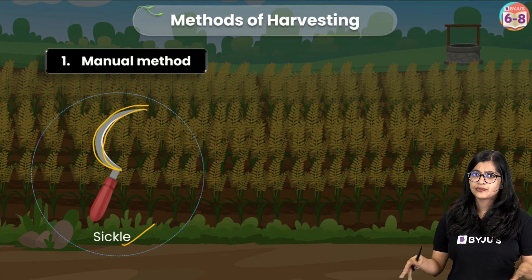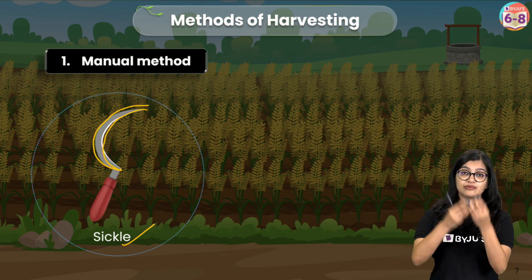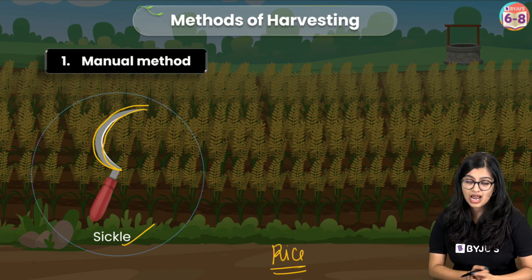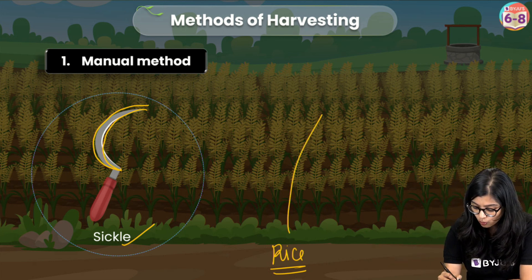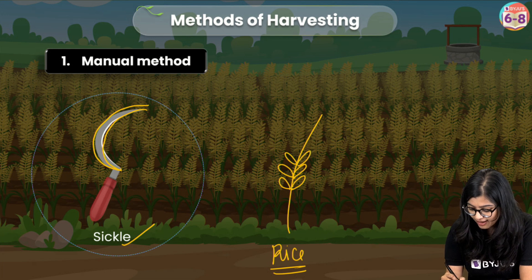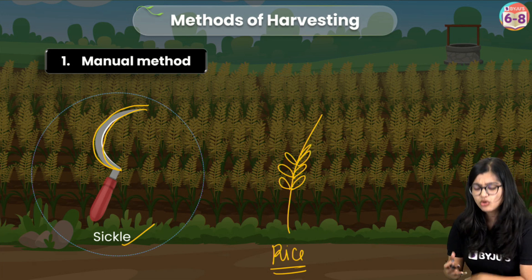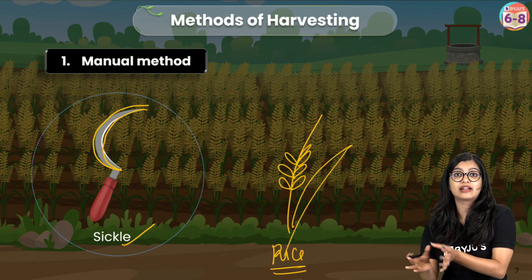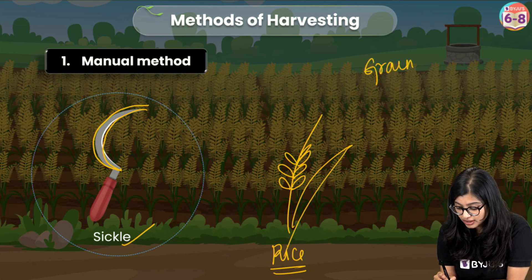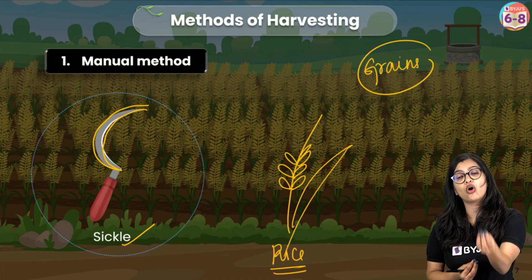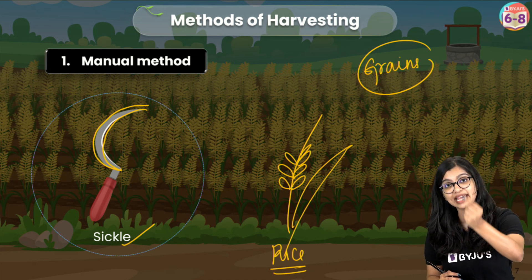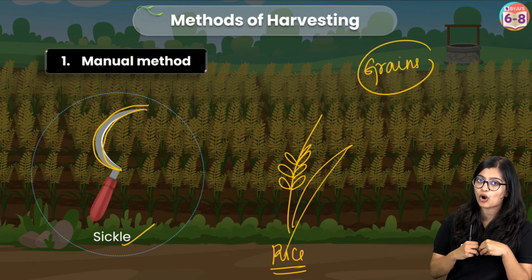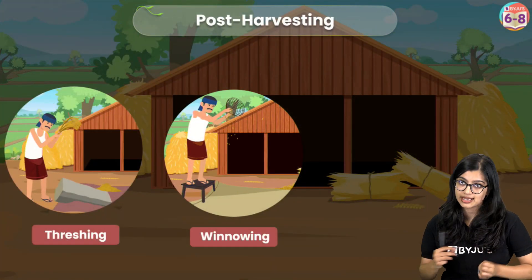After cutting, we have the whole matured plant with us. But for example, if I've grown rice, do I want the stem and leaves along with everything? What I'm looking for specifically are the grains — the part of the rice we eat. So even though harvesting is done, we still haven't got our end product, which is why some post-harvesting techniques are needed. The two important post-harvesting techniques are threshing and winnowing.